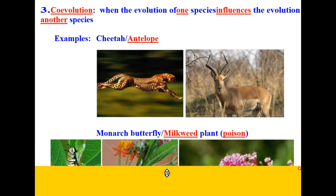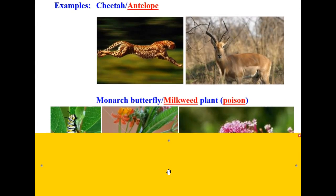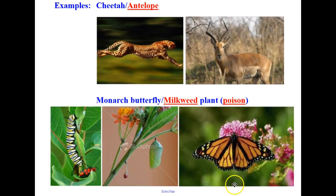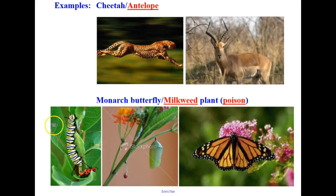Another good example is the monarch butterfly and the milkweed plant. Milkweed plant is poisonous and has a toxin in it. The monarch evolved to be able to eat and feed on the milkweed, therefore producing a butterfly that is also toxic. So they co-evolved together — a great example of co-evolution.